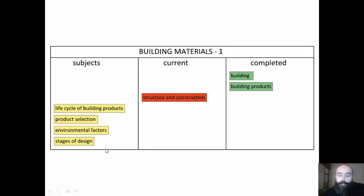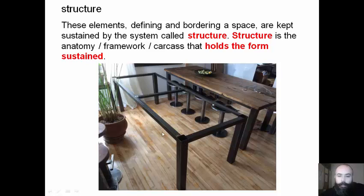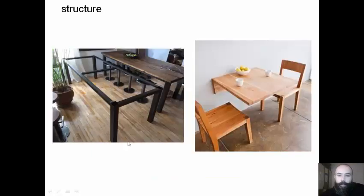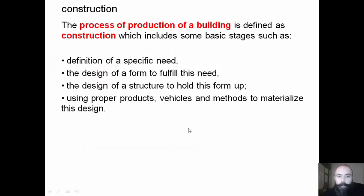At this point we need to look at two notions: structure and construction. Every object, including building elements, is sustained by a system called structure. Structure is the anatomy — or we can call it a framework or carcass — which holds the form sustained. In some examples we can see the structure as a separate object, like the legs of a table, which is the system that holds the form. But in some examples it's impossible to separate the structure; the object itself has its structure inside, like a glass.